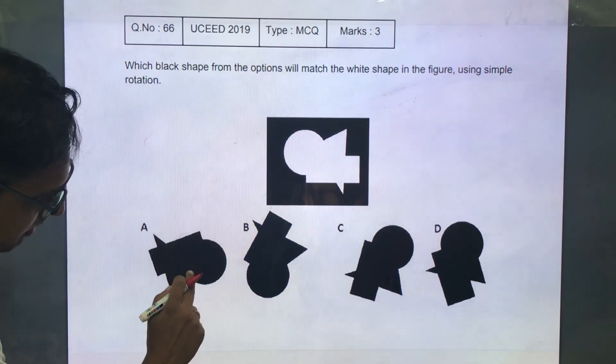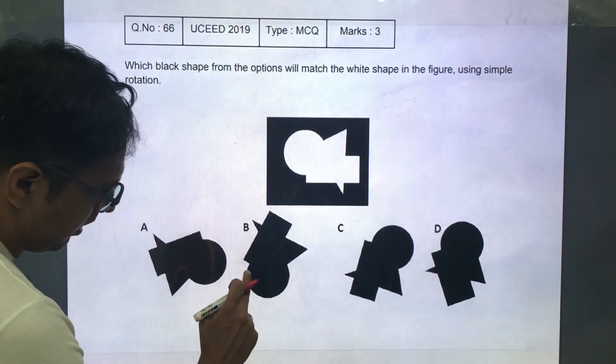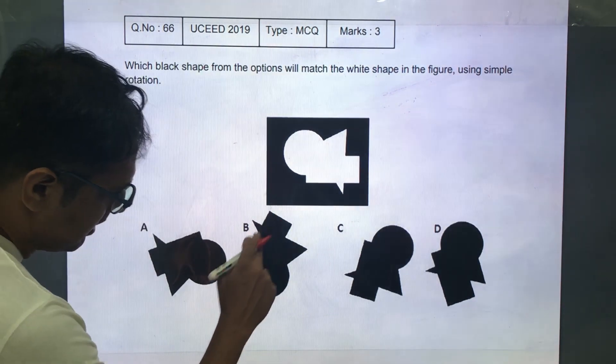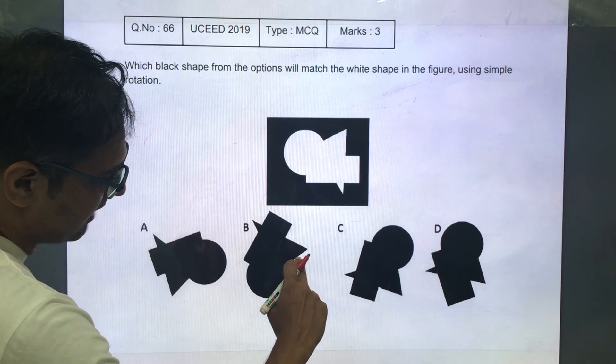Now in this circle if we go clockwise there is a triangular shape coming out. In this circle when you go clockwise there is a rectangular shape. There is a triangular shape but it's on the anti-clockwise side.